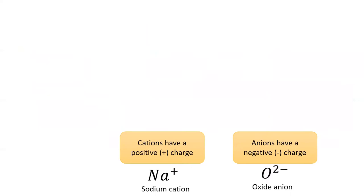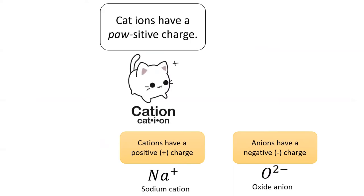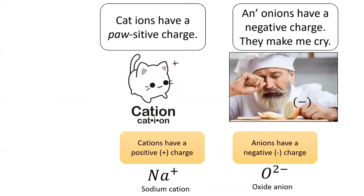Here is a super dumb mnemonic to remember cation versus anion. Remember that cations have a positive charge. And onions make me cry because they are so negative. Only the dumbest mnemonics here. We've got plenty more like this.